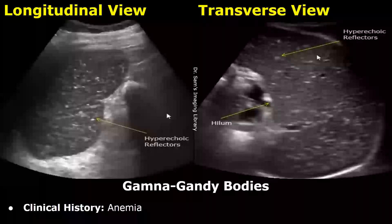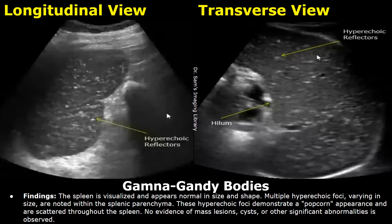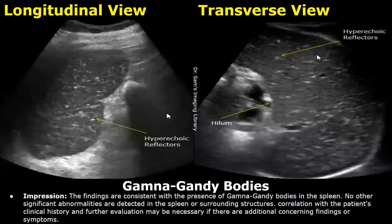This is a case of Gamma-Gandy bodies. The clinical history was anemia. In the findings, there are multiple hyperechoic foci which demonstrate a popcorn appearance and are scattered throughout the spleen. In the impression, these findings are consistent with the presence of Gamma-Gandy bodies in the spleen. Correlation with the patient's clinical history and further evaluation may be necessary if there are additional concerning findings or symptoms.